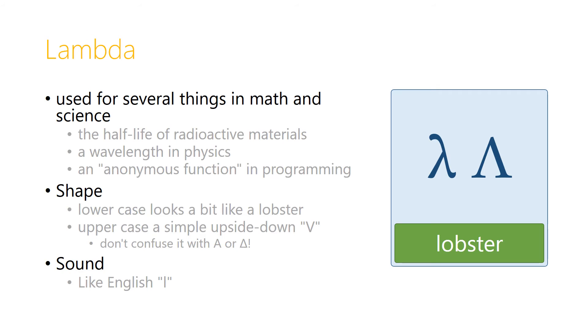The uppercase of lambda looks like an upside down V. Now don't confuse it with alpha, because alpha has the crossbar, like in our capital A, and also don't confuse it with delta, which is the triangle, because it has a closed bottom. The capital lambda doesn't have a closed bottom, and it doesn't have a crossbar. It's just the upside down V, and both of these forms make a sound like the English L, as in lobster.